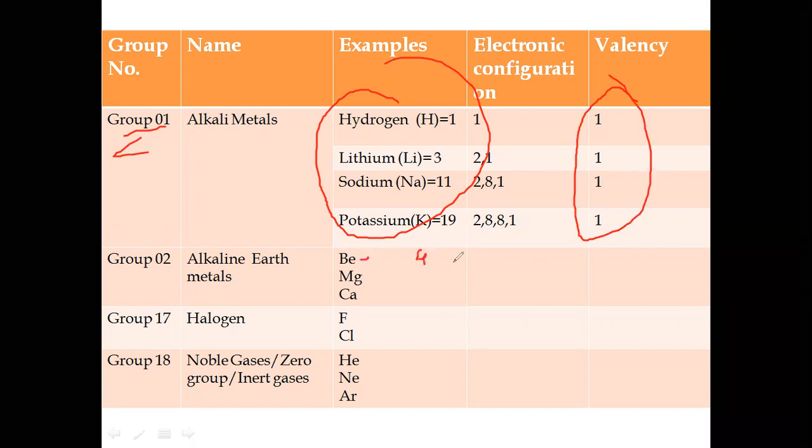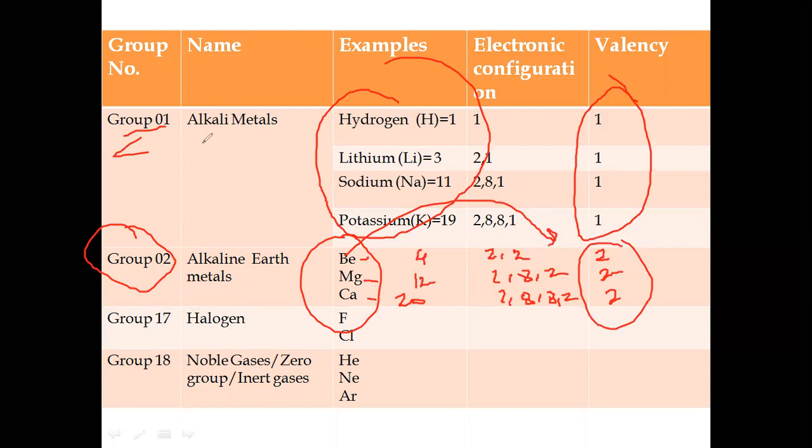Beryllium is four, so valence will be two. Magnesium will be twelve, so it's 2, 8, 2. Valence will be two. Calcium twenty: 2, 8, 8, 2. So here valence is also two. So we can say for group number two, all the elements have valence same as two. So what you can conclude from this for the valence in a group?